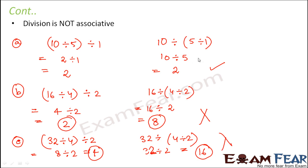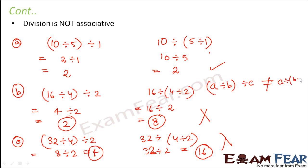You might ask why the result was the same in the first example. That is just a matter of chance - for a certain set of data it might hold true. But universally it does not hold true for all whole numbers. Therefore we say that A divided by (B divided by C) is not equal to (A divided by B) divided by C.